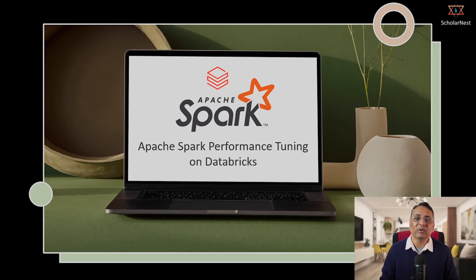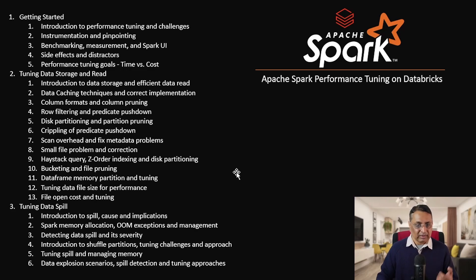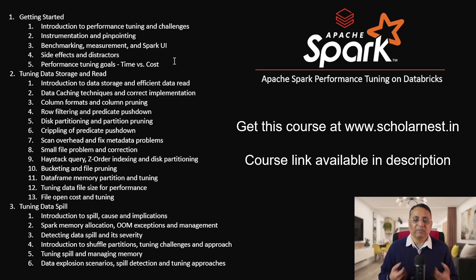Now let me walk you through the course curriculum and what you are going to learn. This course is designed as eight different chapters. Each chapter has its own focus area — we work on a specific category of Performance Tuning problem and approaches for solving that category. The first chapter is Getting Started, a foundation chapter where you will learn what is Performance Tuning, what we are supposed to do as part of the Apache Spark Performance Tuning activity, and what are the different challenges and problems that we face.